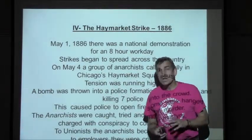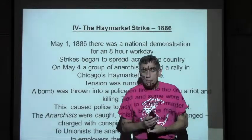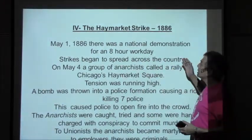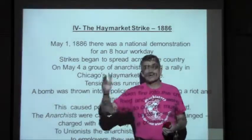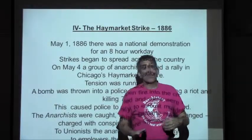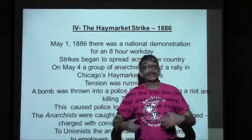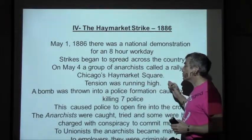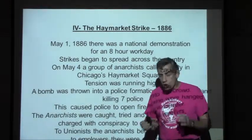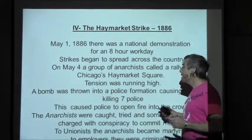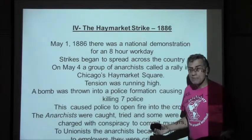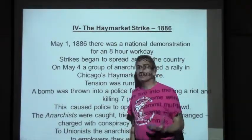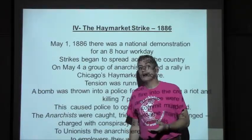Then there was the Haymarket Strike in 1886. On May 1st, 1886, there was a national demonstration for an eight-hour workday, with demonstrations all across the country — one of the largest in Haymarket Square in Chicago, where people would bring their hay to sell in the main square. A group called a rally there; tension ran high, and at the end of this largely peaceful demonstration, a bomb went off. The bomb killed seven police. Anarchists were blamed, caught, tried, and some were hanged. They said it was a union conspiracy, and this led to the end of the Knights of Labor.